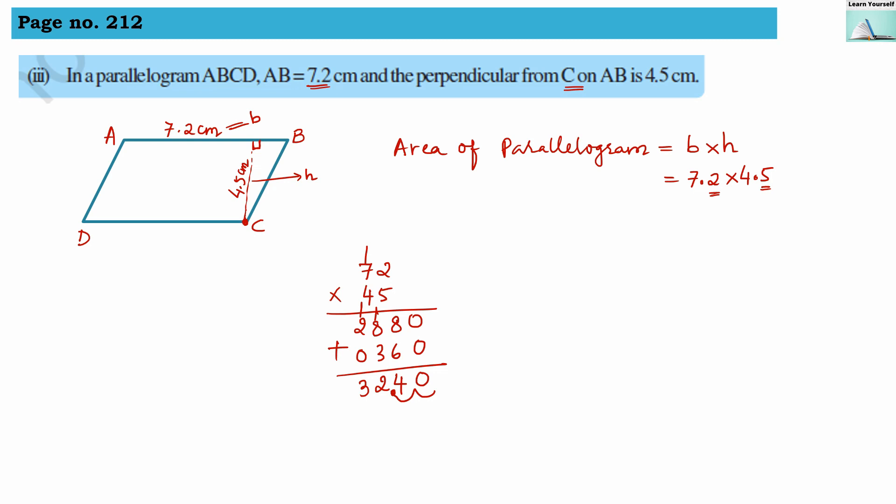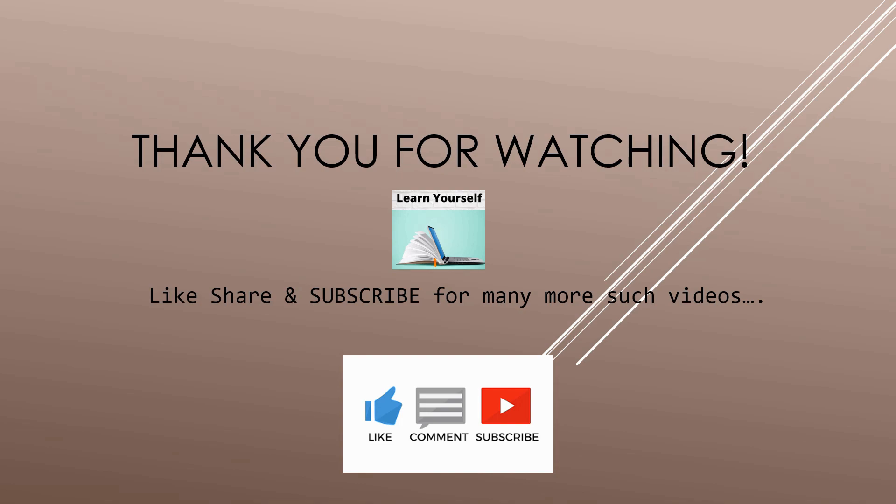If you have any doubt how to multiply the decimal numbers then please watch my video from the chapter decimal and fractions. Our answer is 32.40 and it is area. So it is going to be centimeter square. So thank you for watching and learning with us.